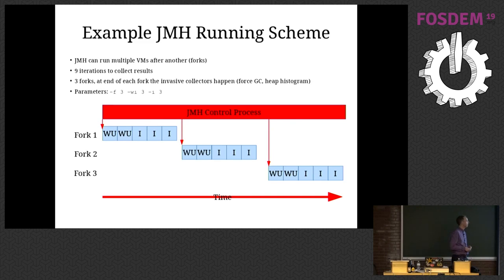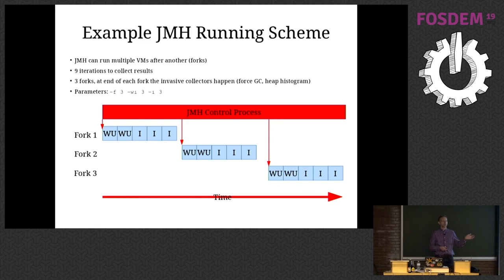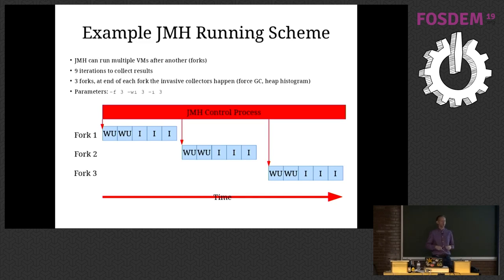Here's the running scheme I use for the upcoming results. JMH has a control process and from that control process it forks the measurement JVMs. You can say how many forks JMH should do. In each measurement JVM there are warm-up iterations and measurement iterations, and those forked JVMs run one after the other. Altogether I have nine measurement iterations, so from the primary metric I get nine results. For the memory metrics gathered with forced GC I only get three, because this runs at the end of each fork.